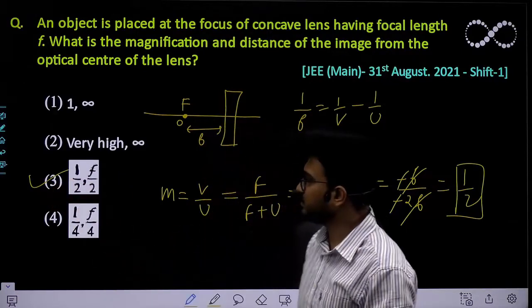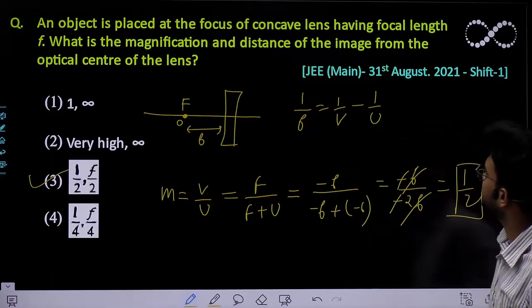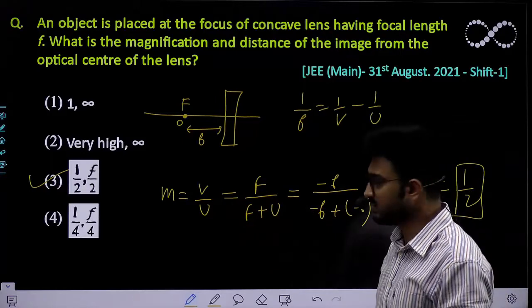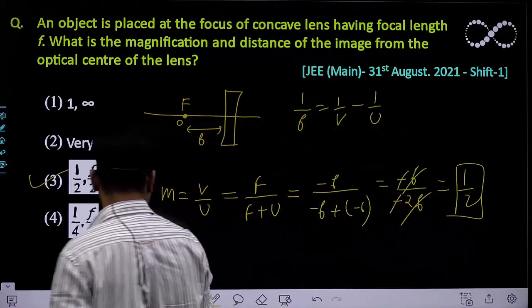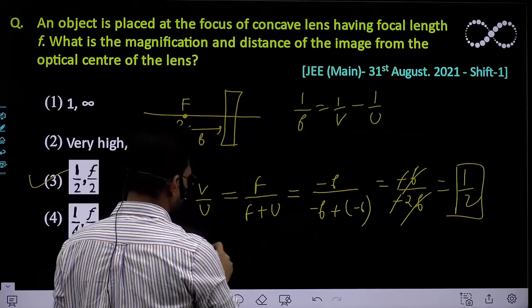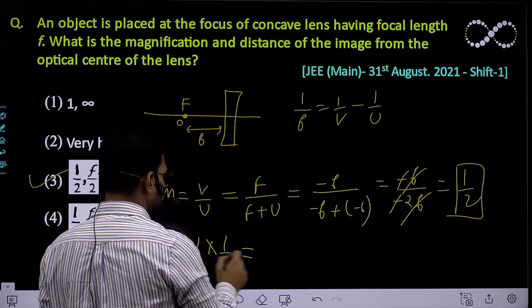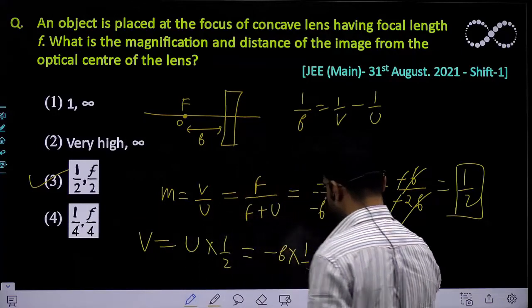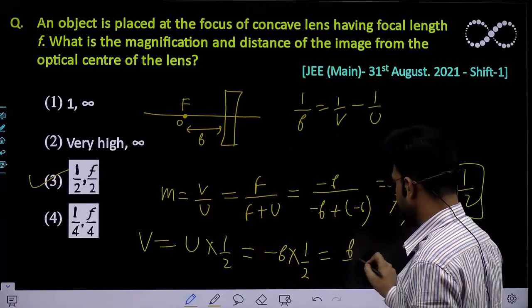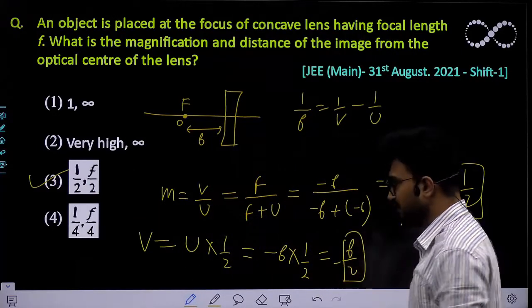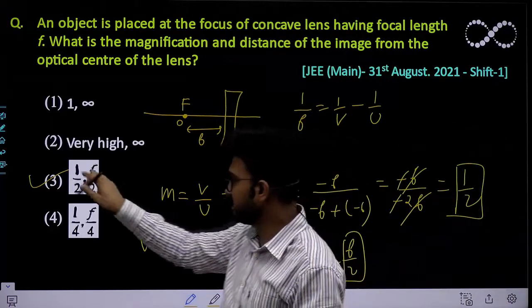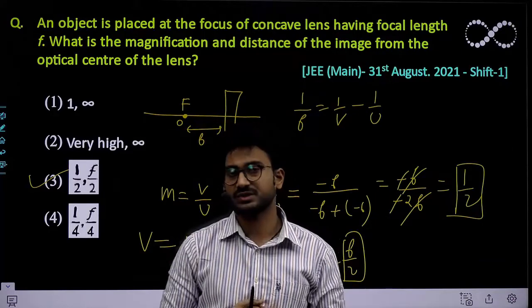You can also find the image distance v. Using the relationship, v = u × m = -f × 1/2, which comes out to be -f/2. So the value of v is -f/2, confirming option 3.